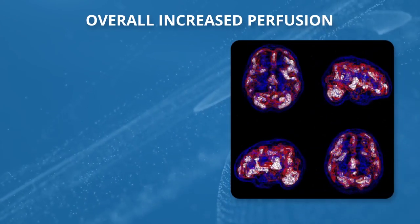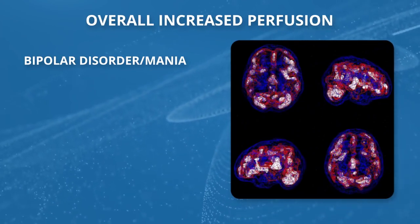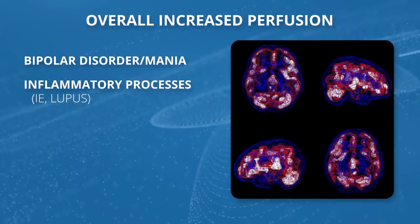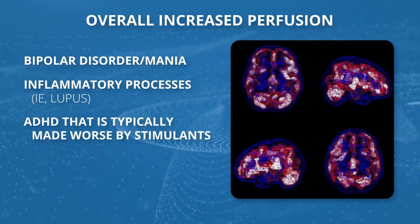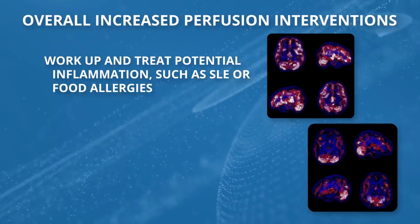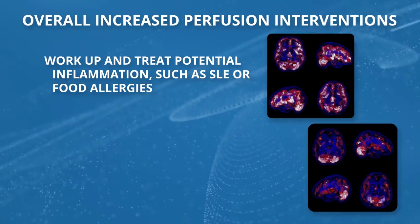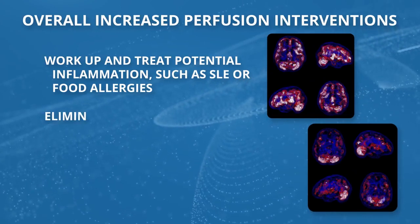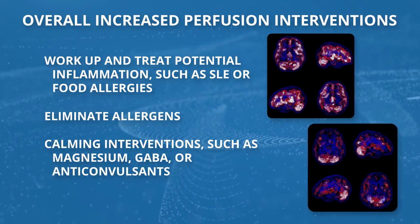Another pattern we see is overall increased perfusion. We often see this in bipolar disorder when people are in manic episodes, during inflammatory processes like lupus or other autoimmune disorders, and in one of the subtypes of ADHD we call the ring of fire. When you see this pattern, you want to work up and treat potential inflammation — such as lupus or even food allergies, which can sometimes cause this.